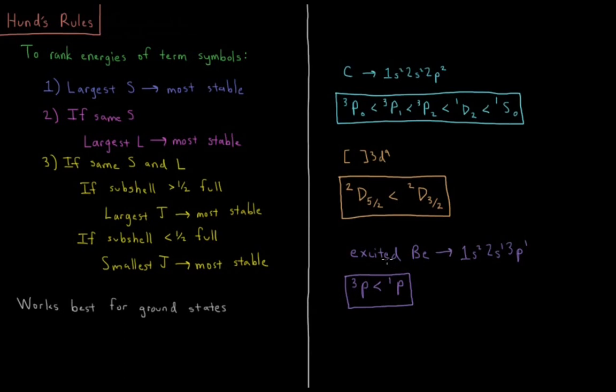For our excited state beryllium, we had a triplet P and a singlet P, so the triplet P wins.